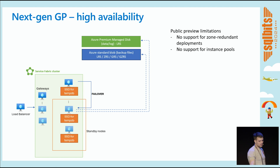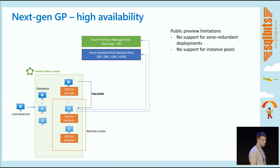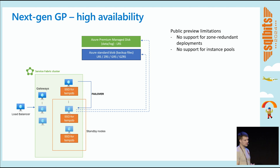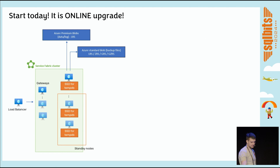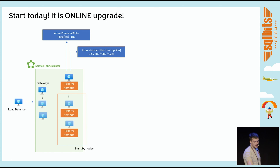Since this is public preview, there are some limitations: next-gen GP cannot be configured with zone-redundant configuration, and there's no support for instance pools yet. But we hope everything will be ironed out by the time we reach GA. You can start today — next-gen GP is available, and it is an online upgrade. If you have existing environments, you don't have to tear them down.